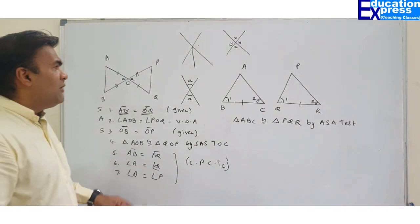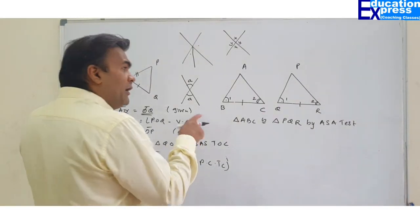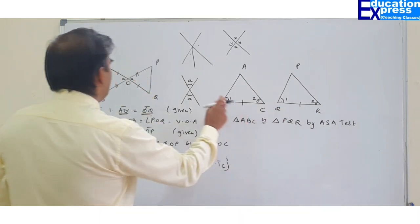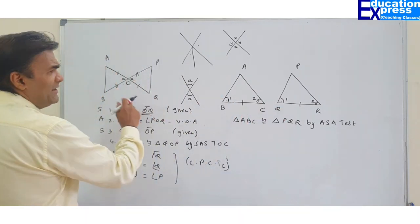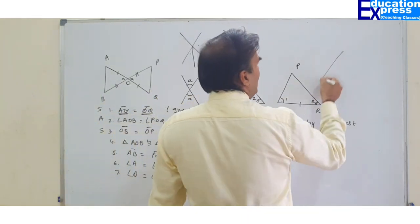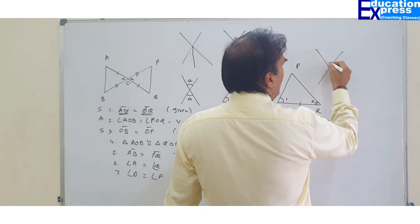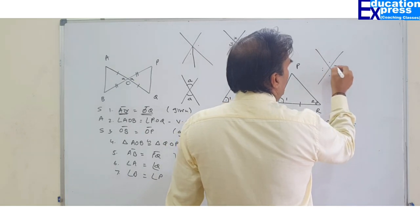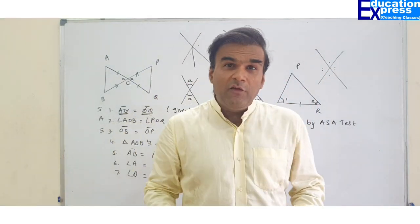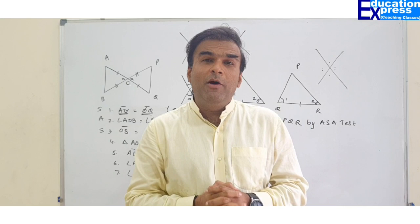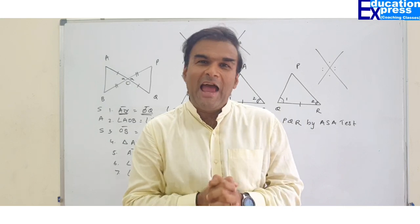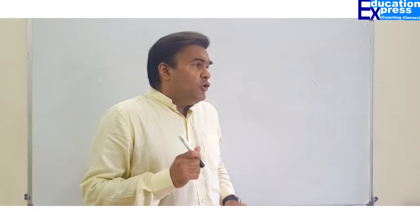The important learning here is that even when obvious information is not given, we can identify vertically opposite angles as a hidden source of information.